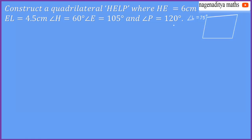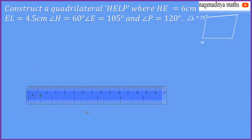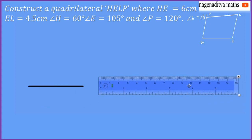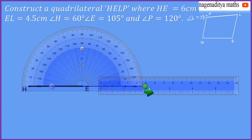This is a rough diagram of quadrilateral HELP. First we have to draw a line segment HE equal to 6 cm. Then from point E, we have to draw an angle of 105 degrees with the help of a protractor. From point E, we have to draw an angle of 105 degrees.